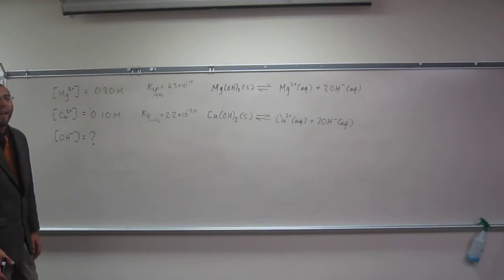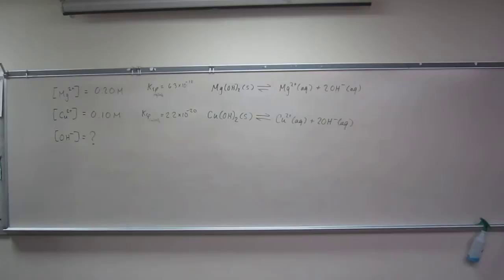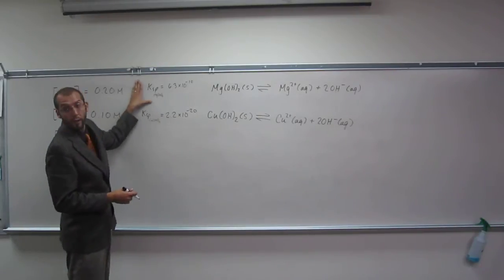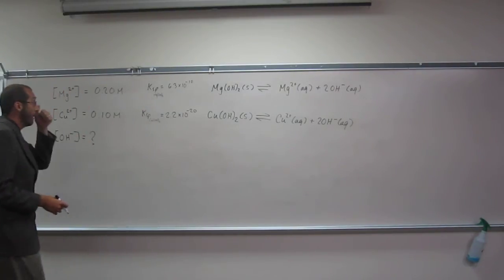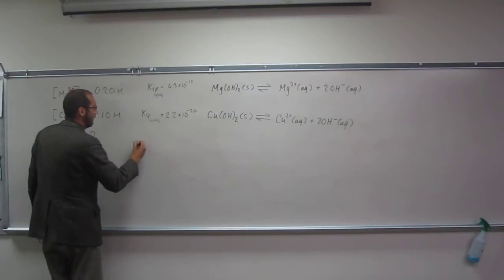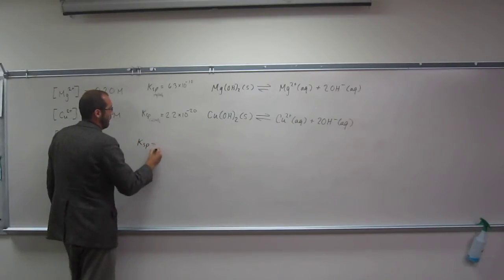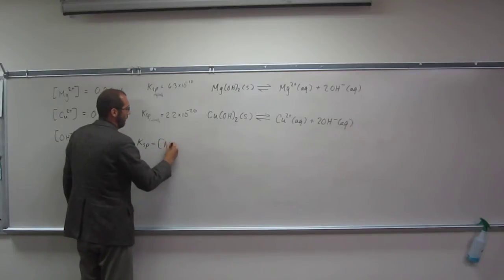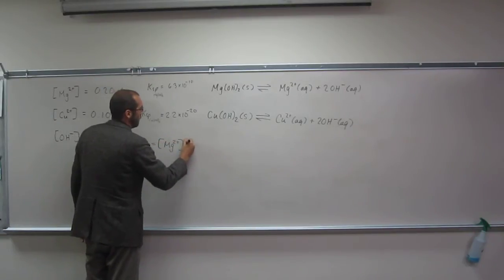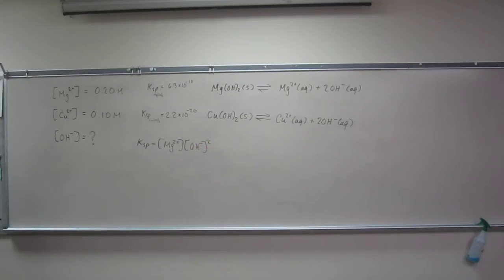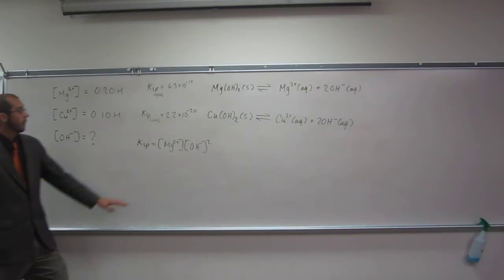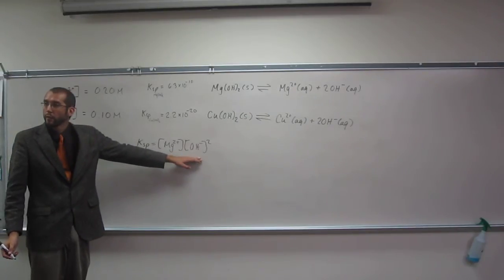The maximum amount of hydroxide ion we could add - let's think about that first. To figure that out, we're going to have to use the Ksp of magnesium hydroxide. So the Ksp of magnesium hydroxide equals the concentration of Mg2+ times OH- squared. We're looking for the concentration of OH-.